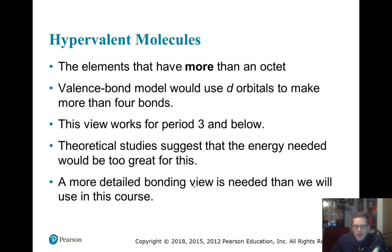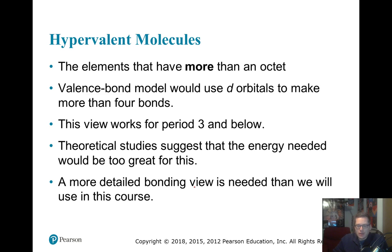Hypervalent molecules — those with more than an octet — make five or six electron domains. In order to use hybridization for these, you'd need d orbitals, giving sp3d or sp3d2. However, current theory says this doesn't really occur because it takes too much energy to promote those d orbitals. Chemistry is still evolving on this point, so we won't use that approach in this class.